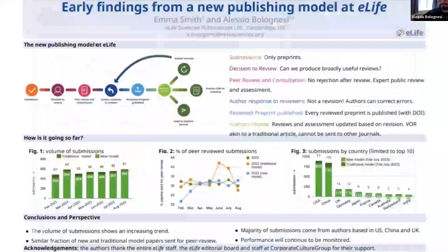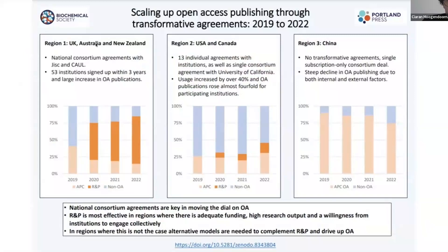Thank you, Alessio. We're going to move to Kieran next. Hi, everyone. I'm Kieran. I'm from the Biochemical Society at Portland Press, and I'm talking about a case study on our transition to open access across three regions, focusing on the impact that transformative agreements have had. In 2020, we launched our read-and-publish (RMP) offering — uncapped, automatic OA to institutions. We've grouped countries based on the level of uptake of those agreements. Starting with region one — the UK, Australia, and New Zealand — these were the only countries where we had national consortium deals in place, which allowed us to pitch our offer simply to all member institutions. Uptake was high from the start. By 2023, we have 53 institutions signed up, and as a result, the proportion of articles published OA went from around 40% in 2019 to 87% in 2022. So that was a big success for us.